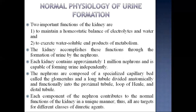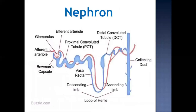Each component of the nephron targets different classes of diuretic agents. In the diagram of the nephron, blood supply to the glomerulus is by the afferent arterioles, and blood exits via the efferent arteriole. The glomerulus is situated in Bowman's capsule, followed by the proximal convoluted tubule (PCT), then the loop of Henle with its descending and ascending limbs, then the distal convoluted tubule (DCT).